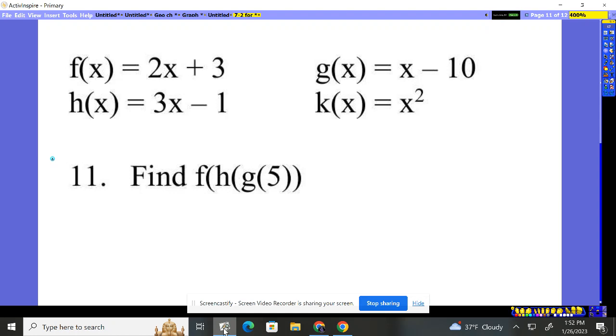Number 11. It's a composition of functions, but you've got to do it three times. We've got to calculate the g function when the x value is 5, get that answer, plug it into the h, get that answer, and plug it back into f. No big deal.